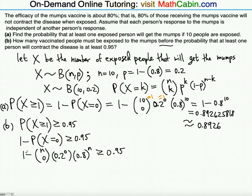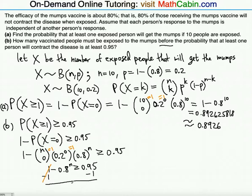Since N choose 0 equals 1, and 0.2 to the 0th power equals 1 for any non-zero N, we simplify to: 1 minus 0.8 to the Nth power is greater than or equal to 0.95. Subtracting 1 from both sides gives negative 0.8^N ≥ negative 0.05. Multiplying both sides by negative 1 reverses the inequality, giving us 0.8^N ≤ 0.05.